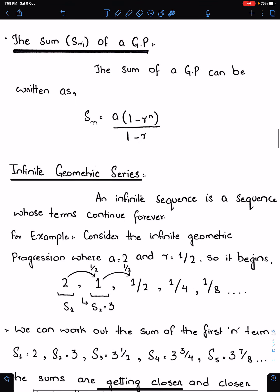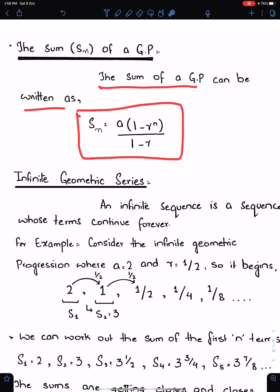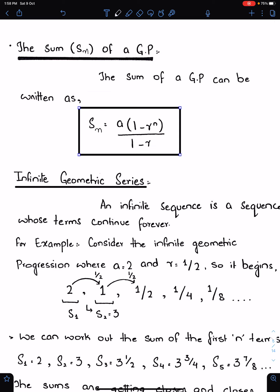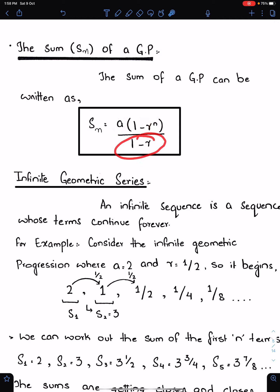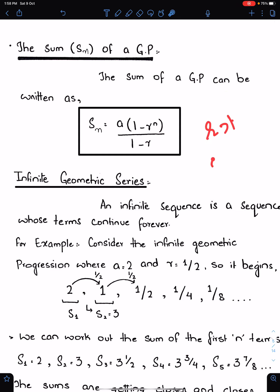The sum S_N of a GP — the sum of a GP can be written using this formula. Just need to learn this formula: A times (1 minus r to the power n) divided by (1 minus r). You can use this formula whether r is greater than 1 or less than 1, whether r is positive or negative. No problem — you can use the same formula for both.